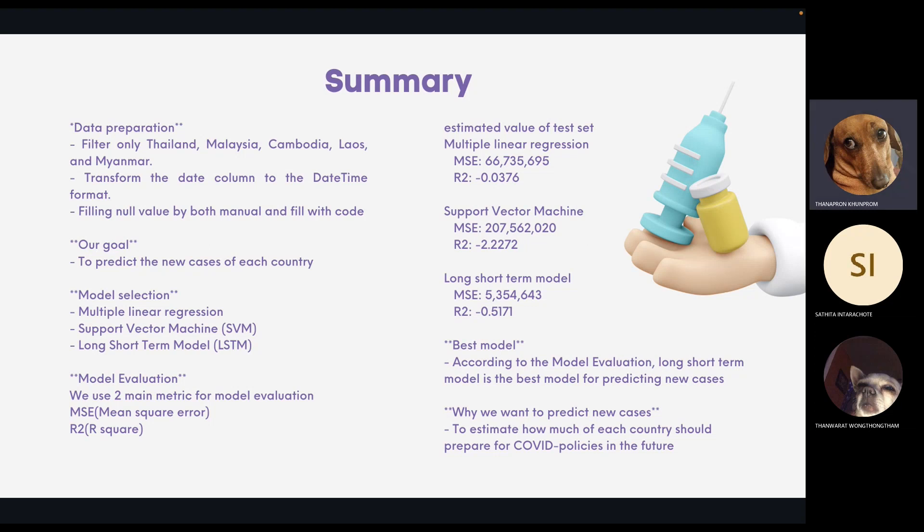And in the model evaluation, we use two main metrics for model evaluation, mean square error and R-square. Estimate value of test set of each model can be seen in this slide. For the best model according to the model evaluation, long short-term model is the best model for predicting new case. And for why we want to predict new case, because we want to estimate how much of each country should prepare for COVID policy in the future.